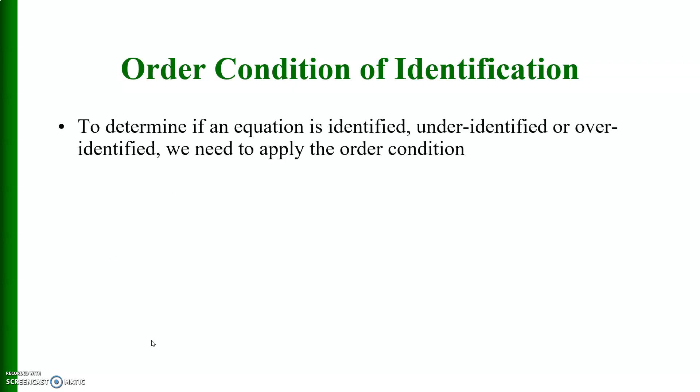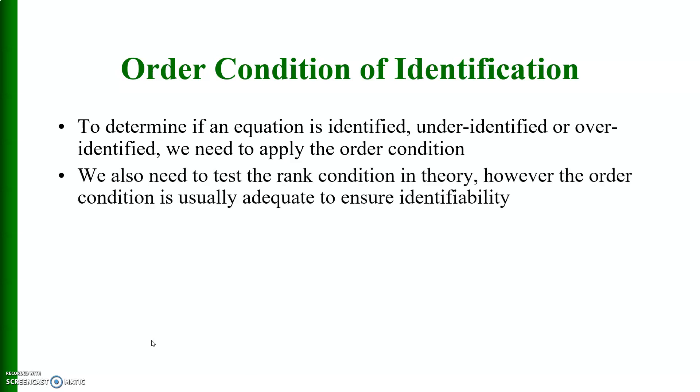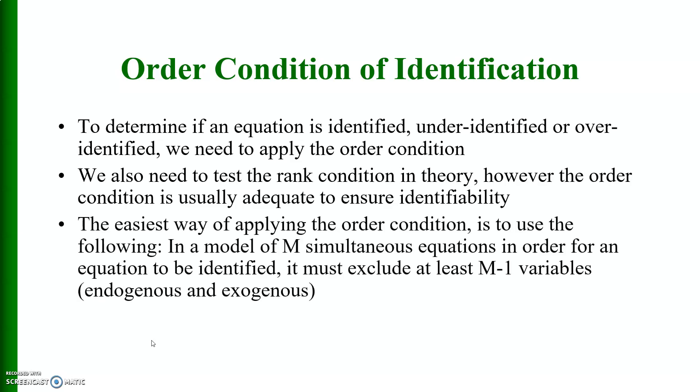Then there are order conditions of identification. To determine if an equation is identified, under identified, or over identified we need to apply the order condition. We also need to test the rank condition in theory. However, the order condition is usually adequate to ensure identifiability. The easiest way of applying the order condition is to use the following: In a model of m simultaneous equations, in order for an equation to be identified, it must exclude at least m minus 1 variables.